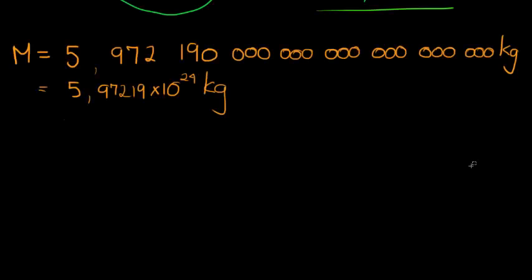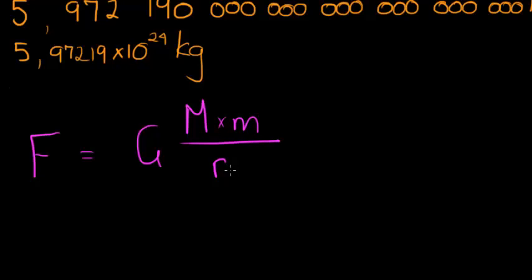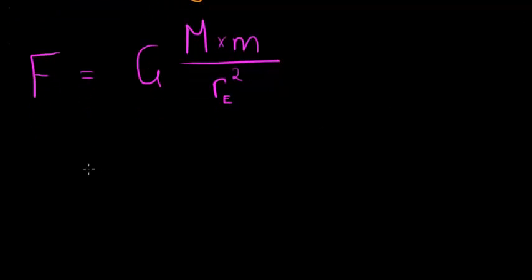So now with these things considered, we can go ahead and calculate the force wherewith the Earth attracts any object. So we have that force is equal to the gravitational constant, the mass of the Earth times the mass of that object divided by the radius of the Earth, let's call it Re, and that is squared.